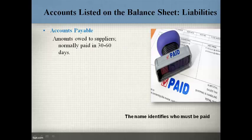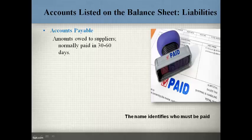The name of the liability is used to identify who is owed and when the amount is typically due to be paid. Accounts payable represents amounts paid to suppliers. Suppliers provide goods or services over and over and send the bill in the mail. The bill is normally due to be paid within 30 to 60 days.